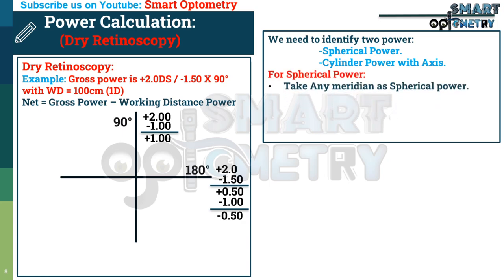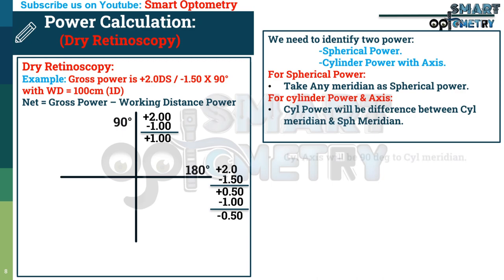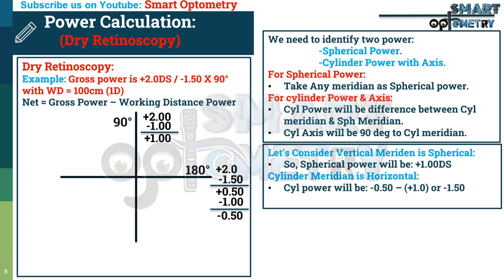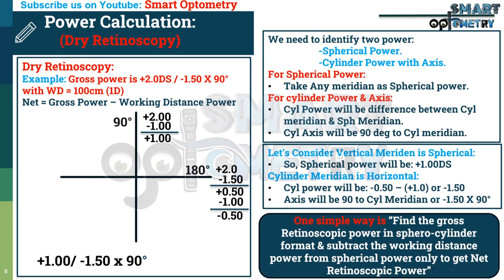Converting the optical cross to spherocylinder format: for spherical power, take any meridian as the spherical meridian. Consider vertical meridian as spherical meridian — spherical power is plus 1. Cylinder meridian is horizontal; cylinder power = minus 0.5 minus plus 1 = minus 1.5. Axis is 90° to the cylinder meridian (which was 180°/horizontal), so axis is 90°. Net retinoscopic power = plus 1 minus 1.5 axis 90°. A simple shortcut: subtract working distance power from spherical power only in spherocylinder format.